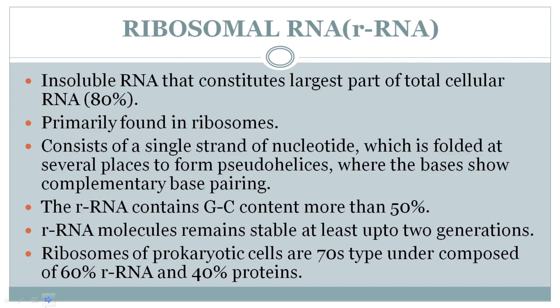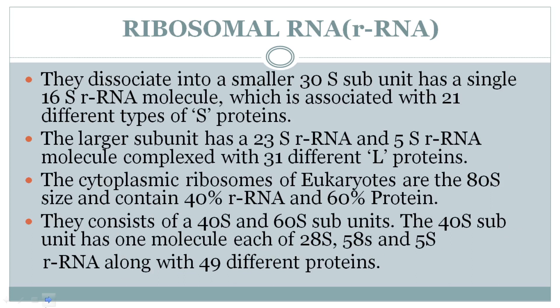rRNA contains GC content of more than 50%, and it remains stable for at least 2 generations. Ribosomes of prokaryotic cells are 70S type, composed of 60% RNA and 40% proteins. When dissociated, the 70S ribosome splits into two subunits: the smaller 30S subunit containing 16S rRNA and 21 different S-proteins, and the larger 50S subunit containing 23S rRNA, 5S rRNA, and 31 different L-proteins.